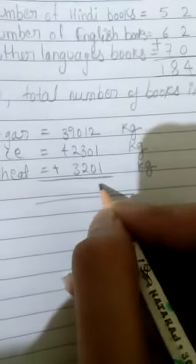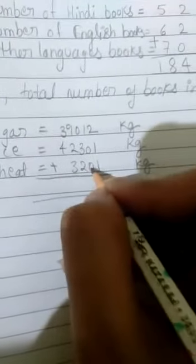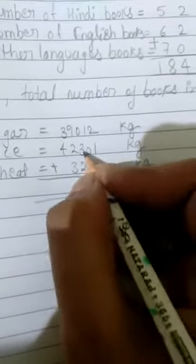2 plus 1, 3 is 3 plus 1, 4. 1 plus 0, 0, 1. Now 3 plus 2, 5. And 9 plus 2, 11. 11 plus 3, 14. And 4 plus 4, 8. Right? So how much?